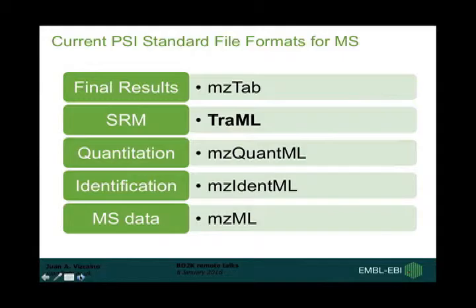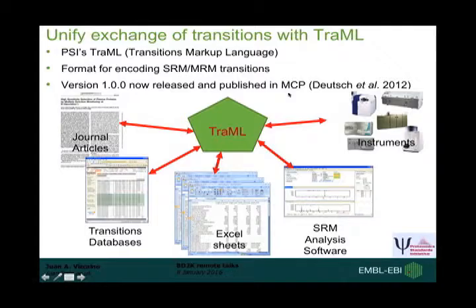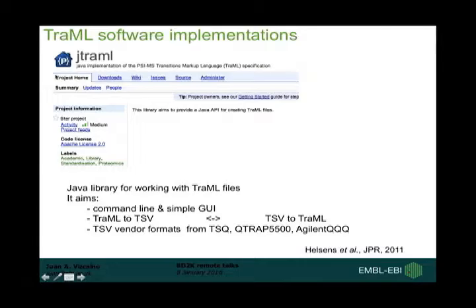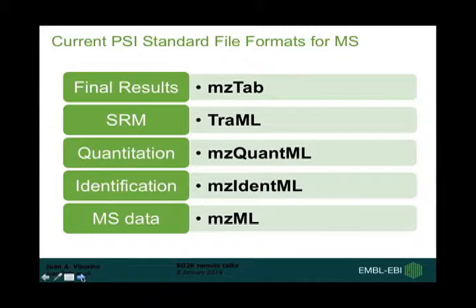The last of the main PSI data standards is TraML, aimed at SRM — Selective Reaction Monitoring — approaches. TraML means Transitions Markup Language. It's a format for encoding SRM and MRM transitions, and version 1.0 was released and published in Nature Chemical Biology in 2012. The schema is much simpler than, for instance, mzML and mzQuantML. It has been implemented in different tools, and there is also a Java library called jTraML to deal with the format and trigger the development of converters. TraML can also be adapted for small molecules.